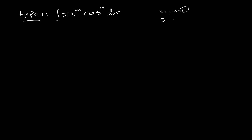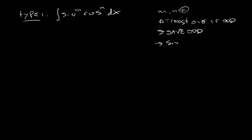So let's say m is 3 and n is 2 — at least one is odd. The procedure here: you save the odd one. You also use the trigonometric identity sine squared of x plus cosine squared of x equals one. So let's work out some examples together.